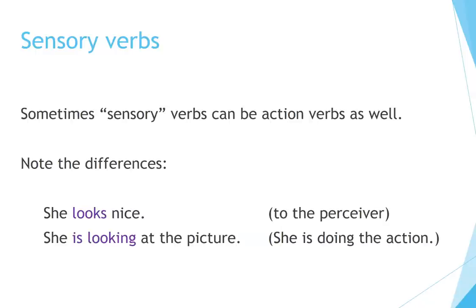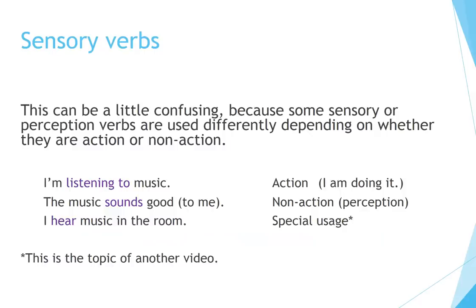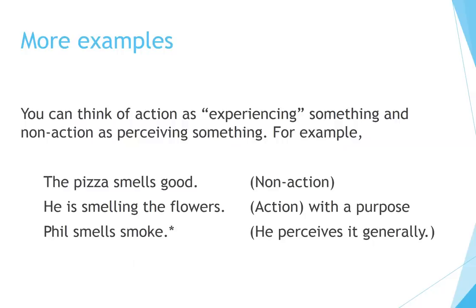Sensory verbs can be action verbs as well. Note the differences: 'She looks nice' — to the perceiver (non-action). 'She is looking at the picture' — she is doing the action. Similarly: 'I am listening to music' — action, I am doing it. 'The music sounds good to me' — non-action, perception. 'The pizza smells good' — non-action. 'He is smelling the flowers' — action with a purpose. 'Phil smells smoke' — he perceives it generally.